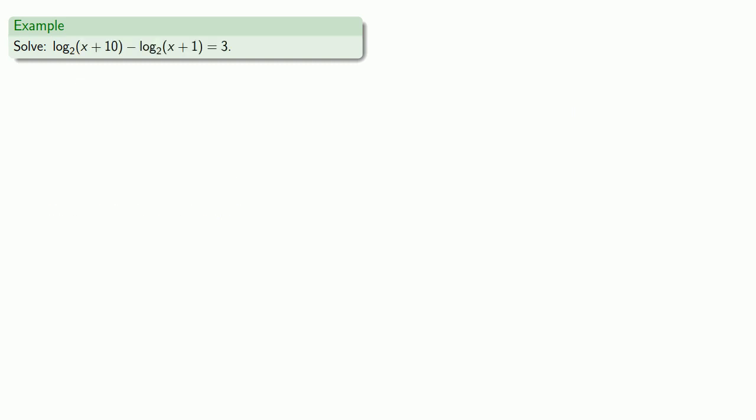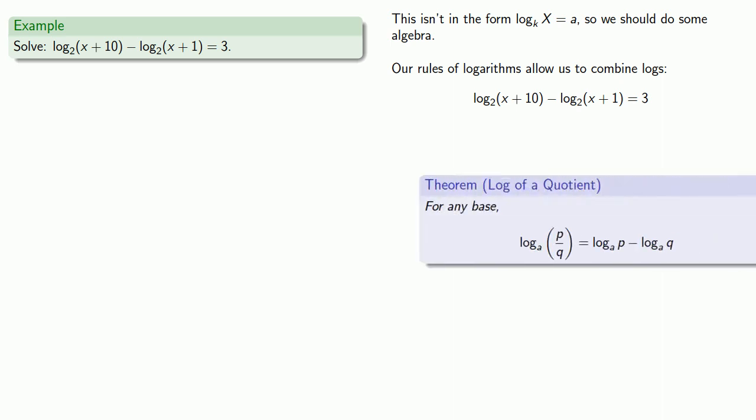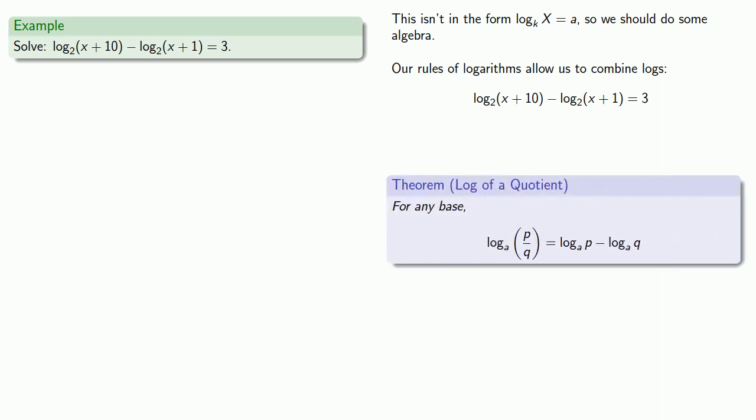How about this equation? The key thing to remember here is that we know how to rewrite log equals, but this isn't in the form log equals. So we should do some algebra. In this case, our rules of logarithms allow us to combine logs. This is the log of something minus the log of something else. And so this is reminiscent of the rule for the log of a quotient. The log of a quotient is the difference of the logs. So we can rewrite this as a single logarithmic expression.